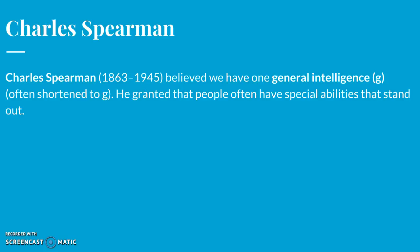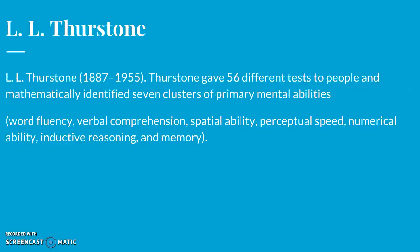The idea of a general mental capacity expressed by a single intelligence score was controversial in Spearman's day and remains controversial now. His opponent, L.L. Thurston, gave 56 different tests to people and mathematically identified seven clusters of primary mental abilities: word fluency, verbal comprehension, spatial ability, perceptual speed, numerical ability, inductive reasoning, and memory.